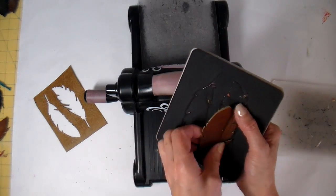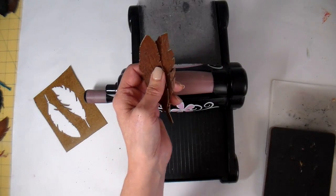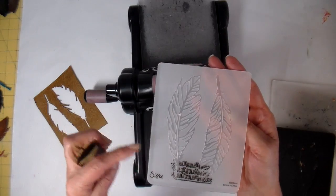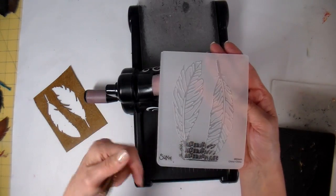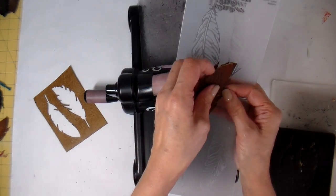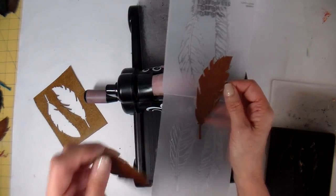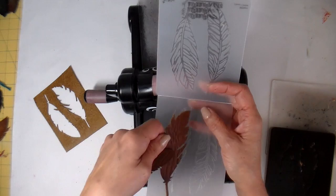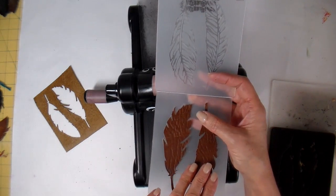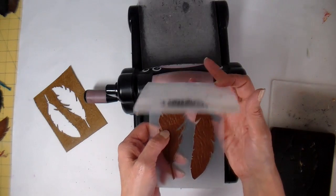And then to go ahead and do the embossing. I like to lay so that the right side of the folder is facing up, and then go ahead and lay these in. And matching it up and closing it down.